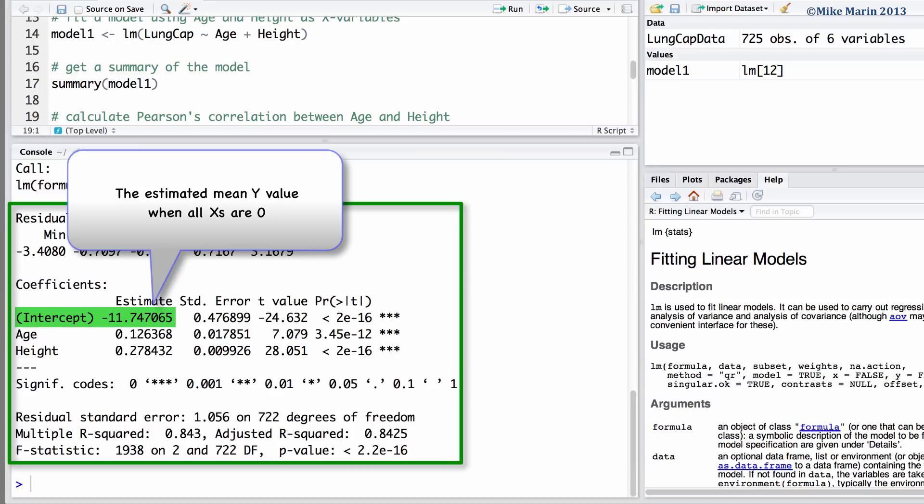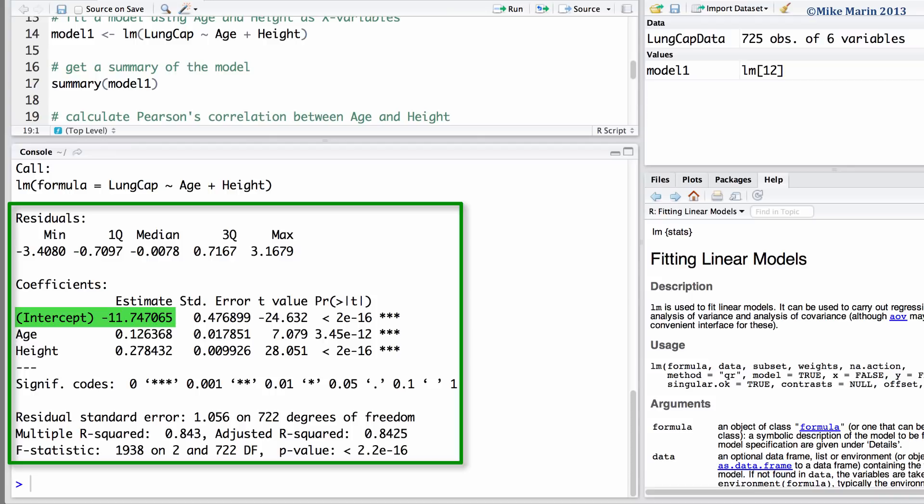The intercept of negative 11.747 is the estimated mean y-value when all x's are 0. This would be the estimated mean lung capacity for someone of age and height 0. You'll notice that this doesn't have a very meaningful interpretation. To give the intercept a better interpretation, we can center age and height. This is a topic we'll discuss in following videos.